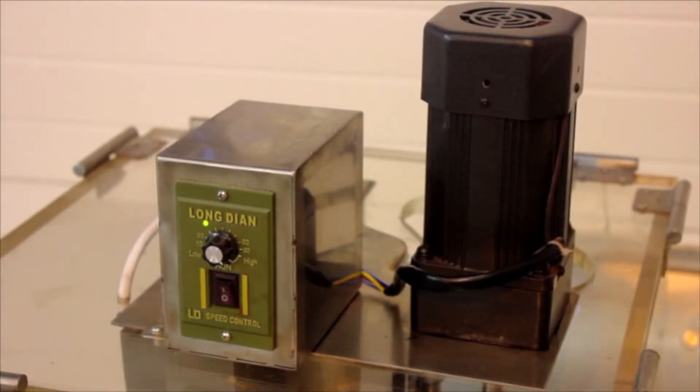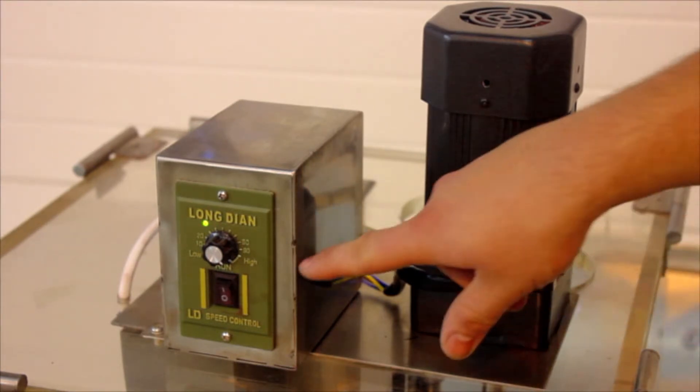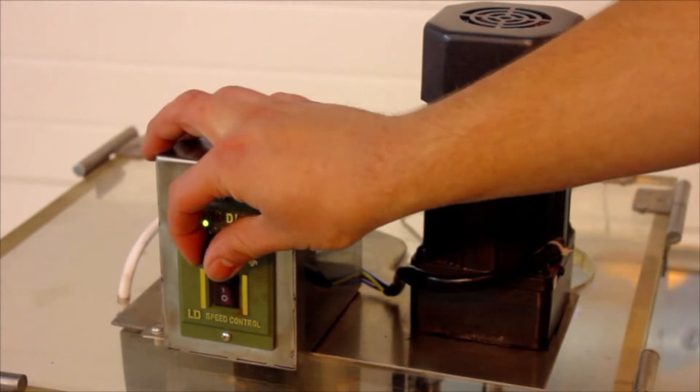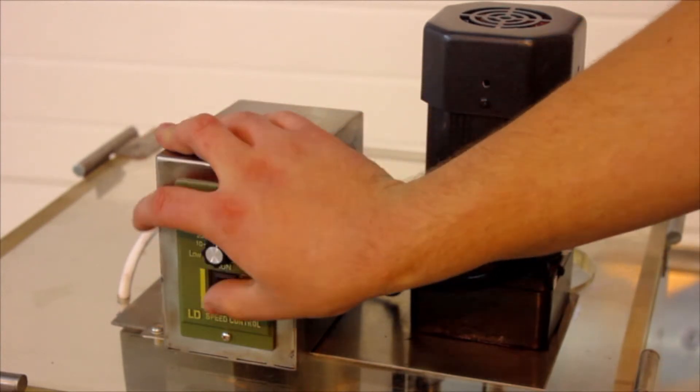The RTP 5, 7 and 9 come with an optional extra force feeding system. This allows for a more consistent tablet weight. The force feeding system is controlled through this small panel on the top of the machine and has adjustable speed and an on off switch.